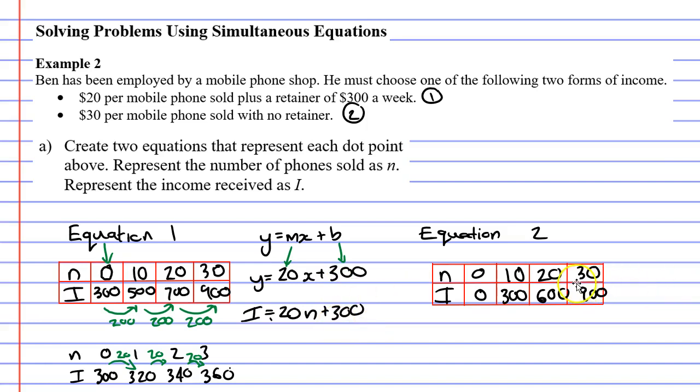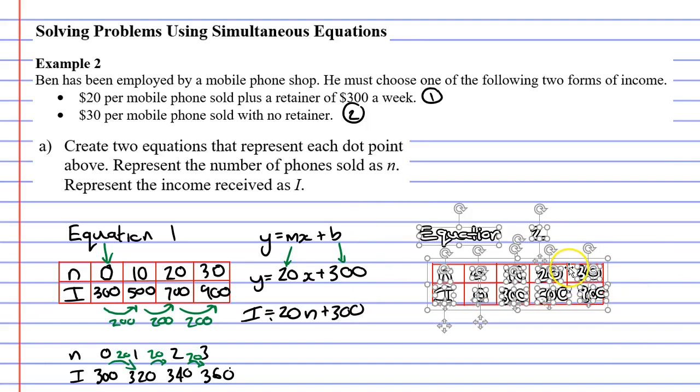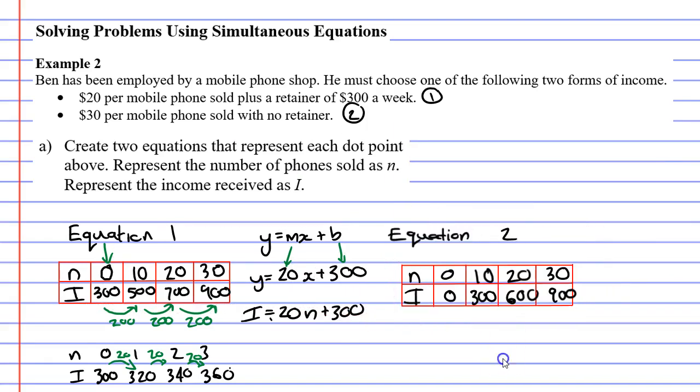Let's now look at equation two. We'll follow the same process, starting with the gradient intercept formula, being y equals mx plus b. b is always the easier one to find. It's just the y-intercept. So we look at when n is 0 and we see that i is 0. So b is actually going to be 0, which means I don't actually have to write plus 0. I can just cancel it out. But we'll do that later.